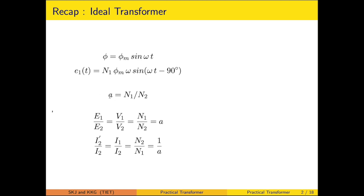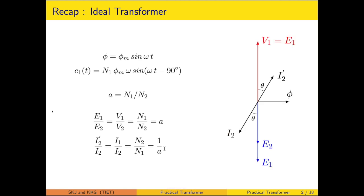We have introduced the turns ratio, which is defined as the number of turns in the primary to the number of turns in the secondary. With the help of the turns ratio, we are able to relate E1 to E2 — the induced EMF of the primary to the secondary — and I2-dash upon I2, the reflected secondary current on the primary, in terms of turns ratio, and we are able to draw the phasor diagram.